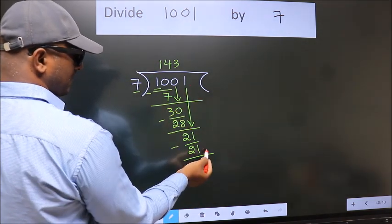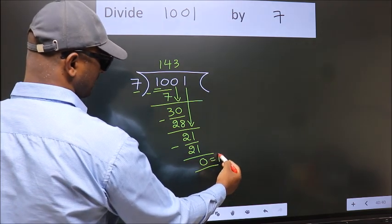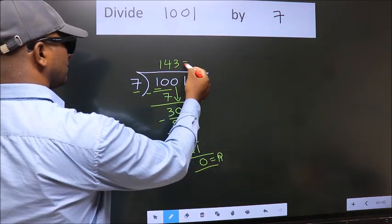No more numbers to bring down. So we stop here. This is our remainder. This is our quotient, 143.